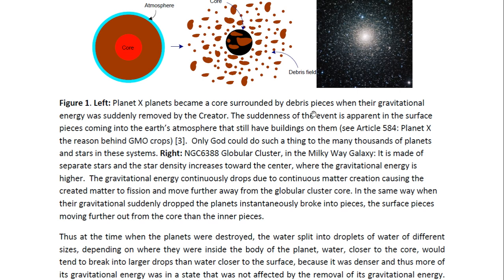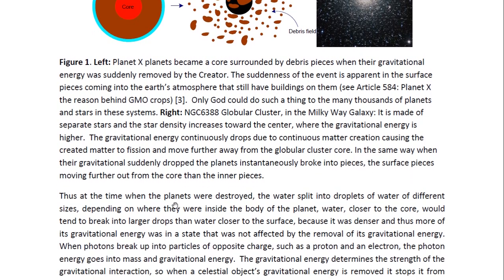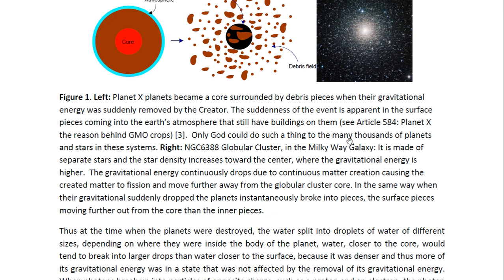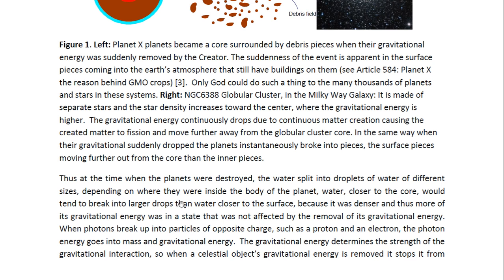The surface pieces moved further out from the core than the inner pieces. Thus, at the time when the planets were destroyed, the water split into droplets of different sizes. We went from a continuous body of water that turned into little droplets because of the loss in gravitational energy, just like what occurs with globular clusters. Depending on whether we're inside the body of the planet, we would get different sized droplets. Water closer to the core would tend to break into larger drops than water closer to the surface because it was denser to start off with. Thus, more of its gravitational energy was in a state that was not affected by the removal of its gravitational energy.